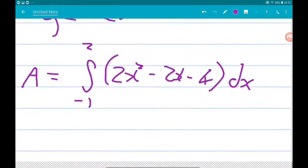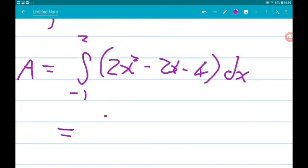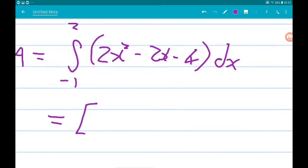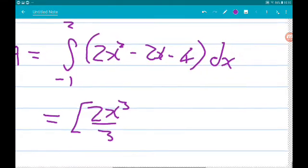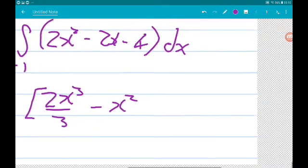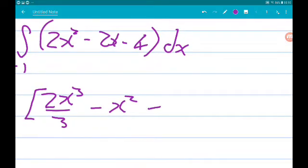So, we are going to get 2x cubed over 3 minus x squared minus 4x between 2 and minus 1.